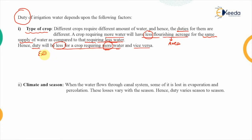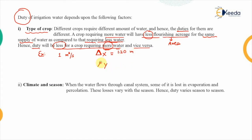For example, let's say we are supplying one cumec of water. The depth of water required by crop X, defined as delta X, let's say that is 1.2 meters in standard units. And the total depth of water required for crop Y, which is delta Y, let's say that is 1.00 meter. It is obvious from the data that crop X is requiring more water in comparison to crop Y.